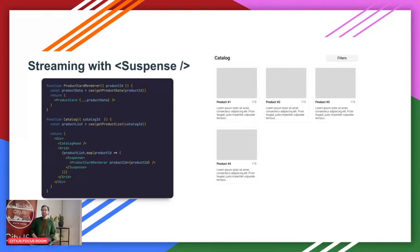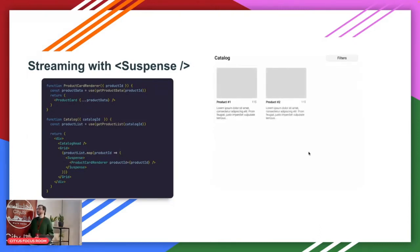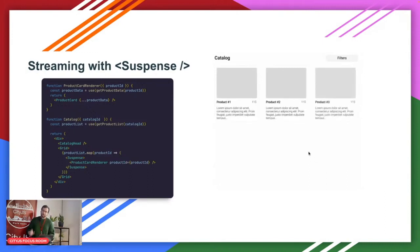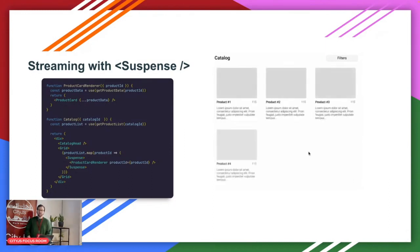To make it more visible — this is highly slowed down — but essentially what happens is you first see the catalog headline and those filters, and then you start seeing those product cards popping in, in order, whenever the data for each piece of component is ready. There are lots of real-world applications that could benefit from this: a dashboard where each card is a graph fetching data that perhaps takes some time.